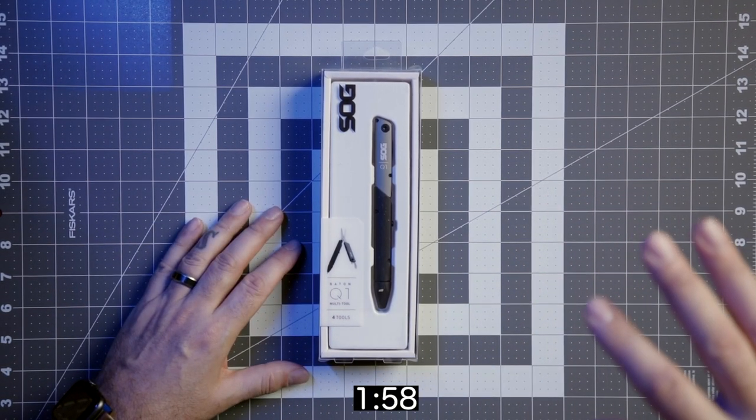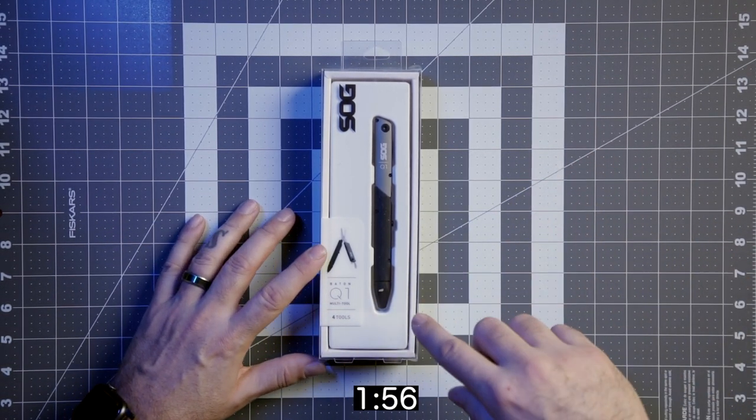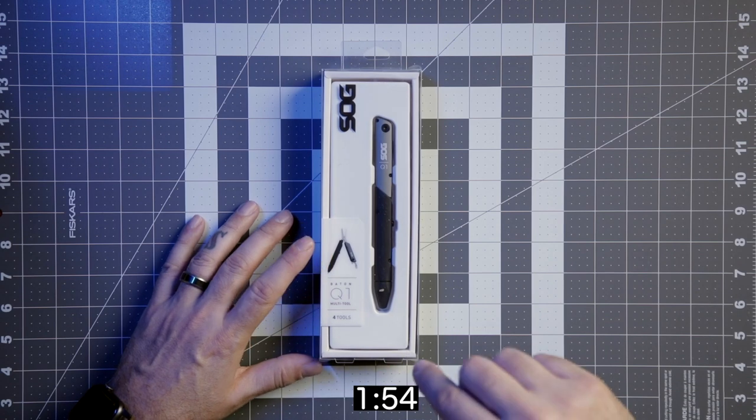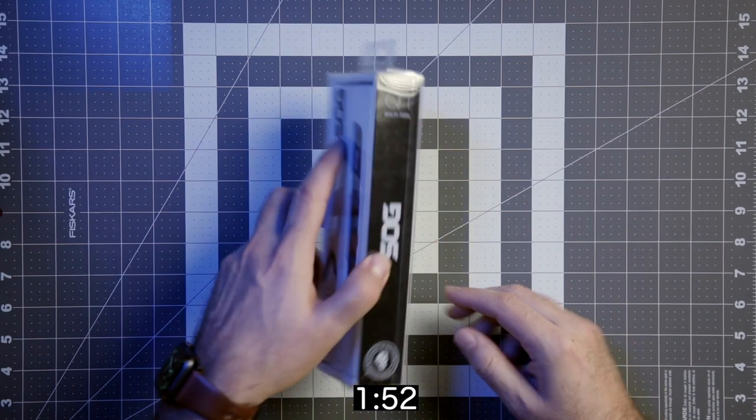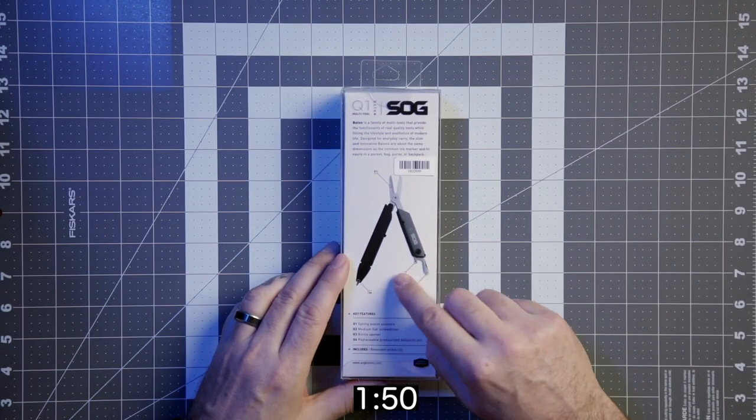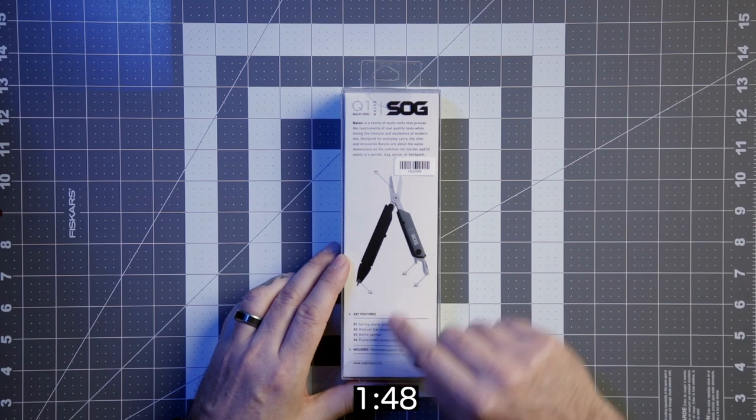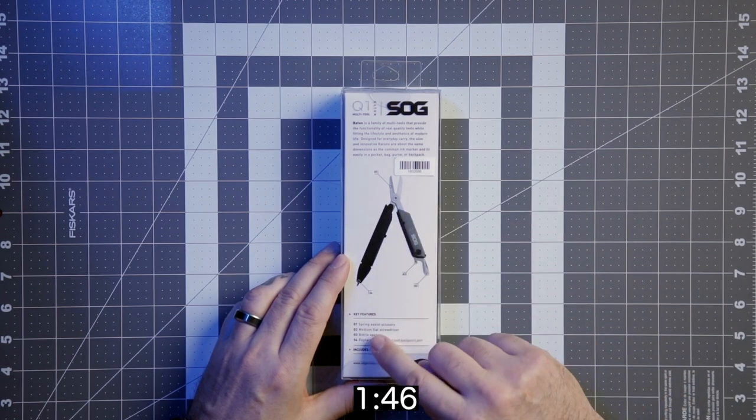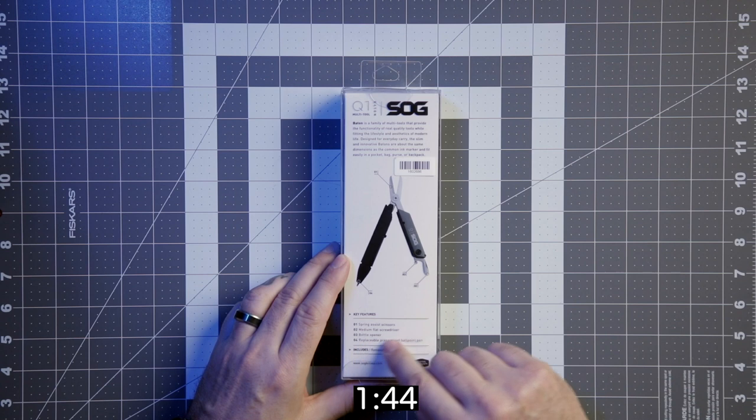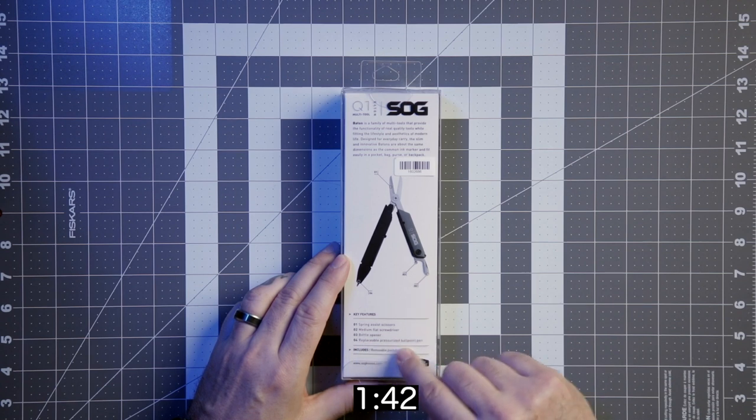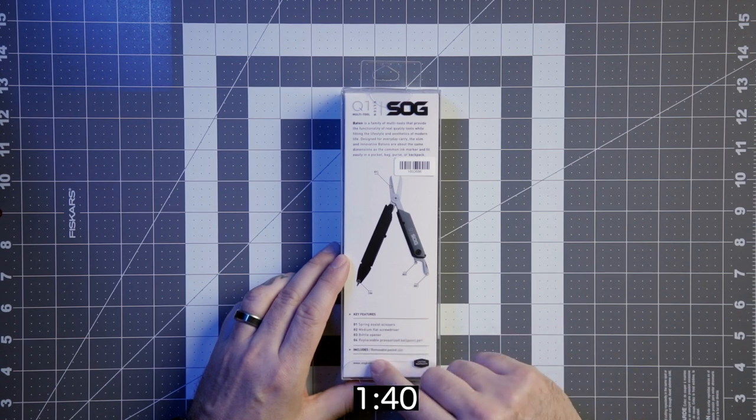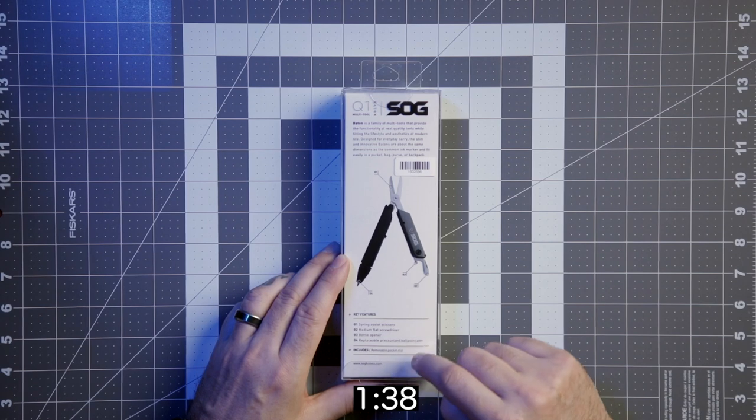So today what I have for you is from SOG. This is the Baton Q1 multi-tool. It's four tools in one. So as you can see from the packaging here, you have a spring-assisted scissors, a medium flat screwdriver, a bottle opener, a replacement pressurized ballpoint pen, and includes a removable pocket clip.